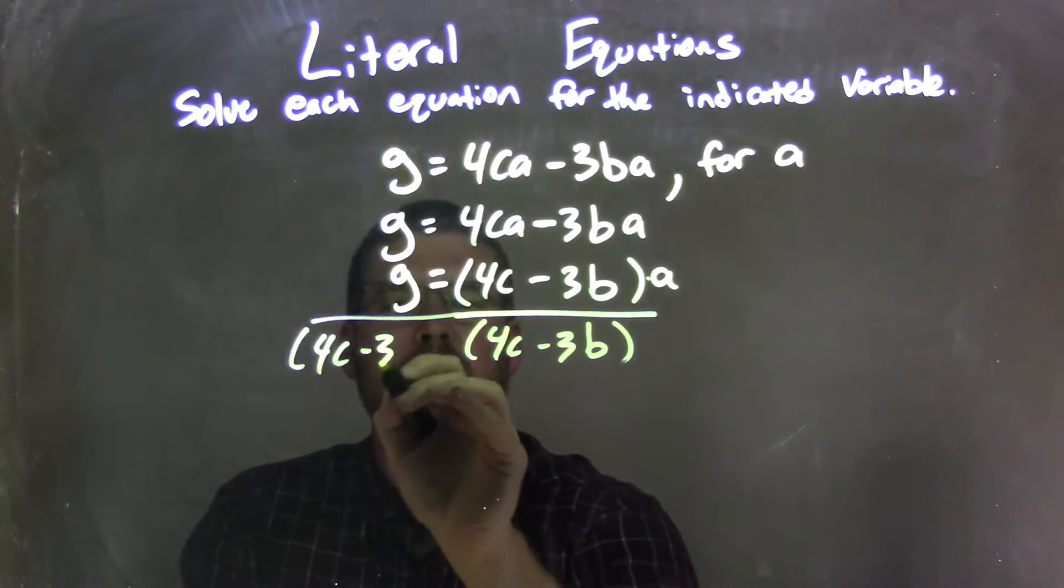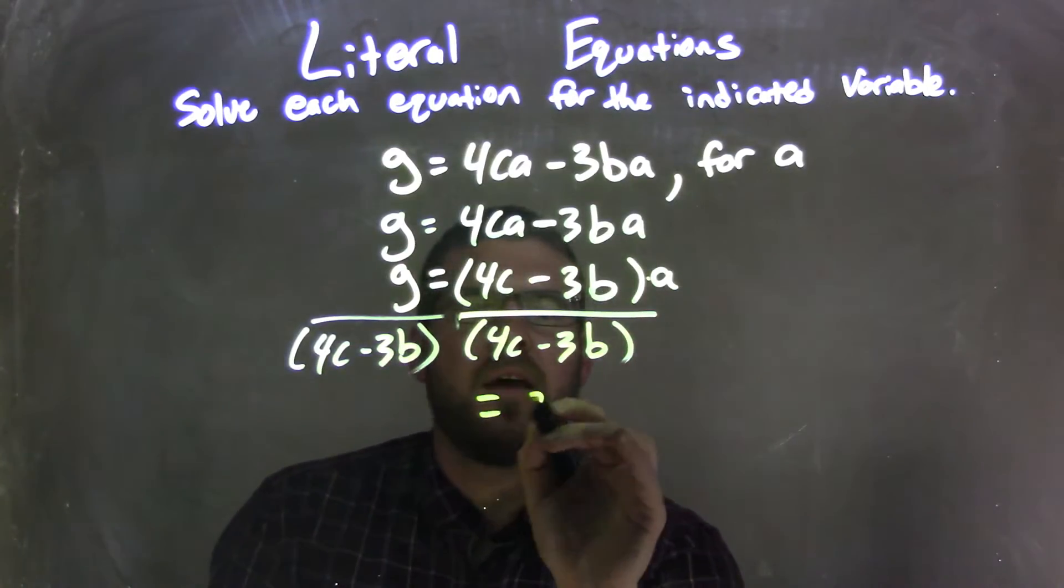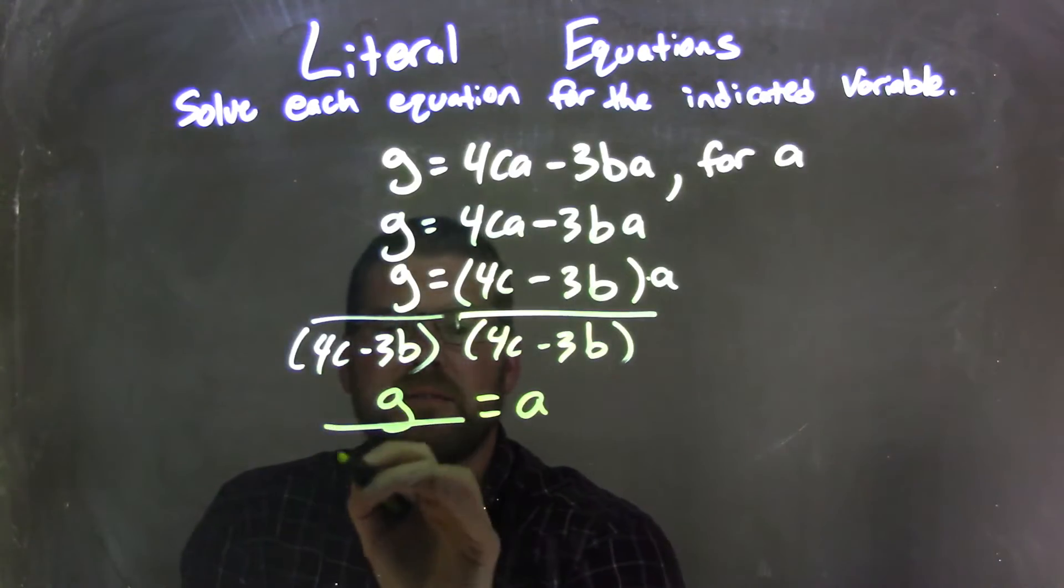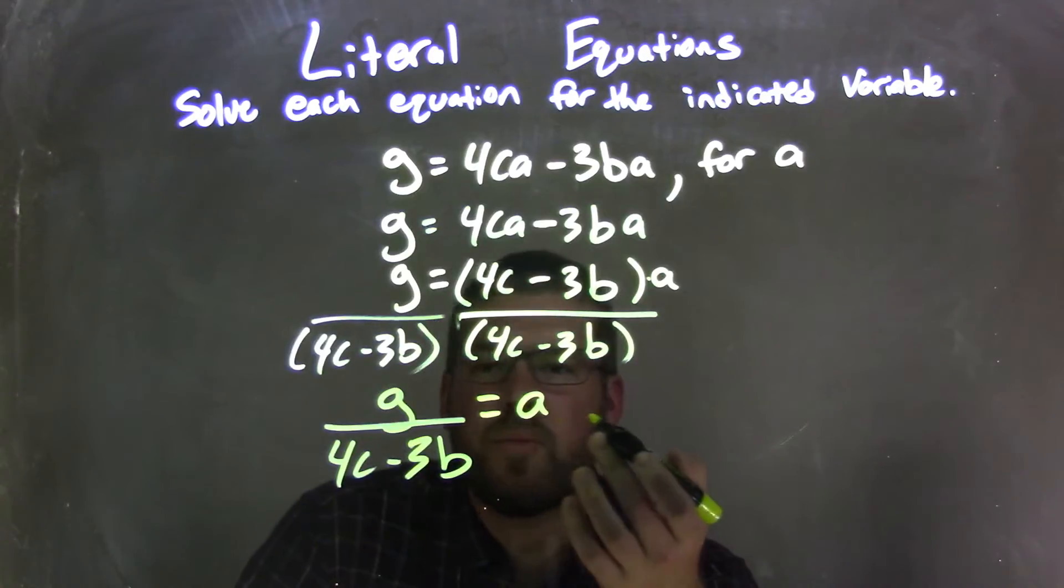4C minus 3B. Now you don't need to put the parenthesis when you divide it, but I just did. A is by itself to my right, and my left, I just have G divided by 4C minus 3B. And A's already isolated, we're done.